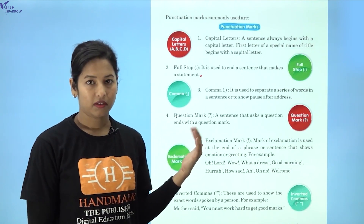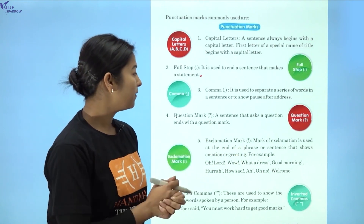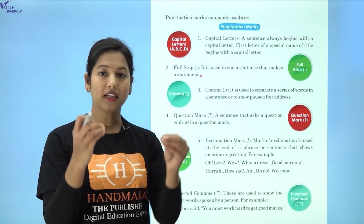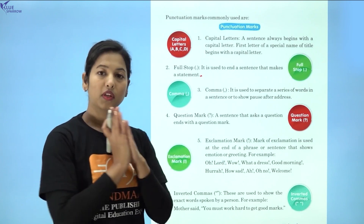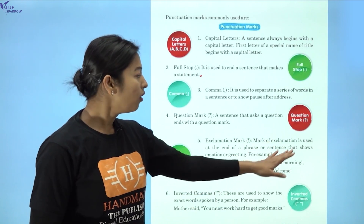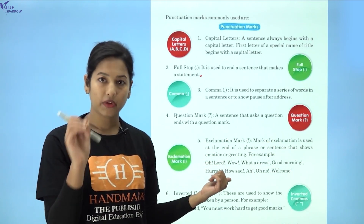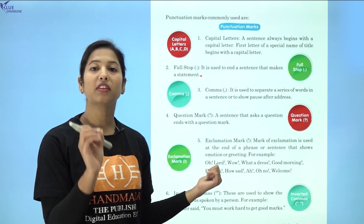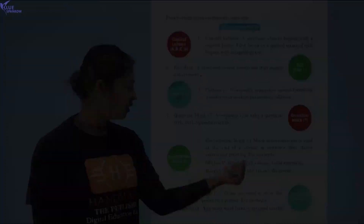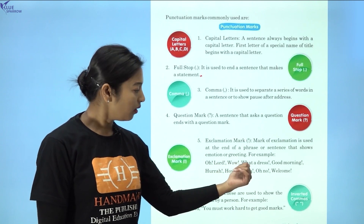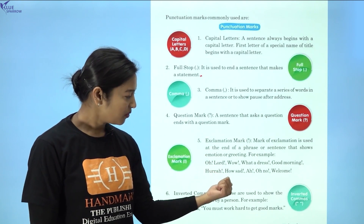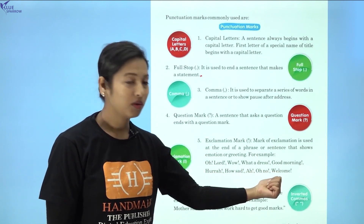The fourth one is question mark. As we have already discussed in a previous class, a sentence that asks about something or asks a question always ends with a question mark. The fifth one is exclamation mark. The exclamation mark is used at the end of a phrase or sentence that shows emotion or greetings. For example: Oh Lord! Wow! These are exclamation marks.